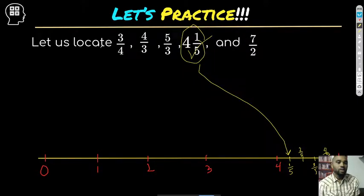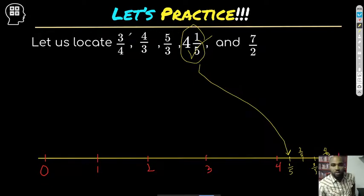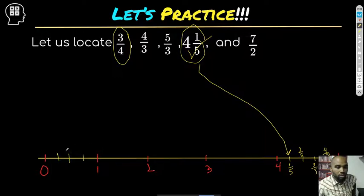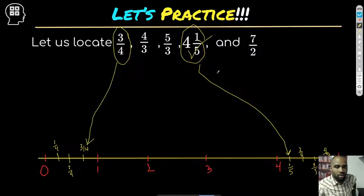The next easiest one is the proper fraction three fourths — the numerator is less than the denominator. There's no whole number in there, so it's between zero and one. We're going to divide this into fourths — one fourth, two fourths (half), and three fourths. Draw my arrow — there it is.